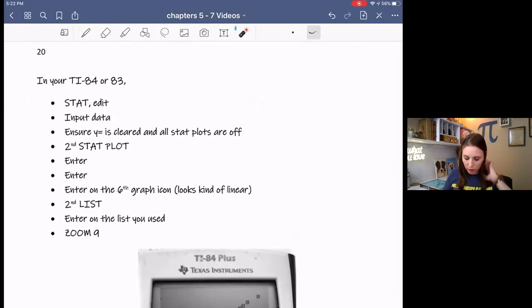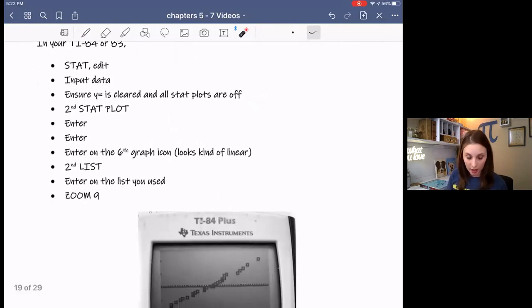In your TI-84 or 3, you're going to have to input your data into the stat edit menu. Make sure that y equals is cleared so that you don't have a line show up. Then go to second stat plot. That's where all your plots are. Turn on only the first one. And you're going to choose the sixth icon. It kind of looks like a line a little bit. Or maybe a dot plot, kind of. But a linear dot plot, basically.